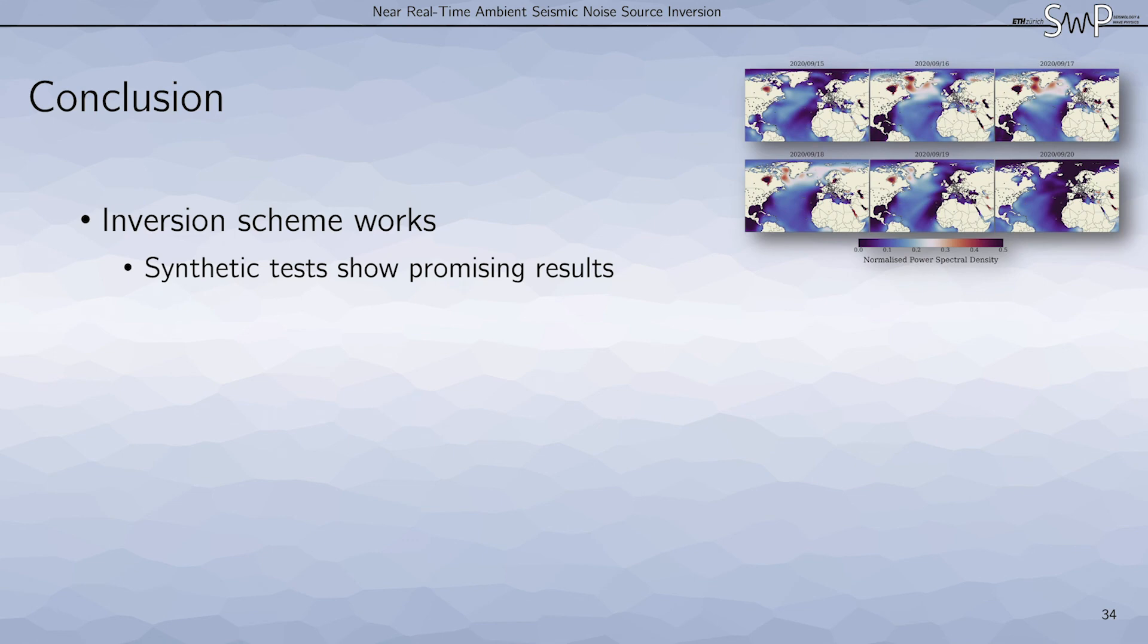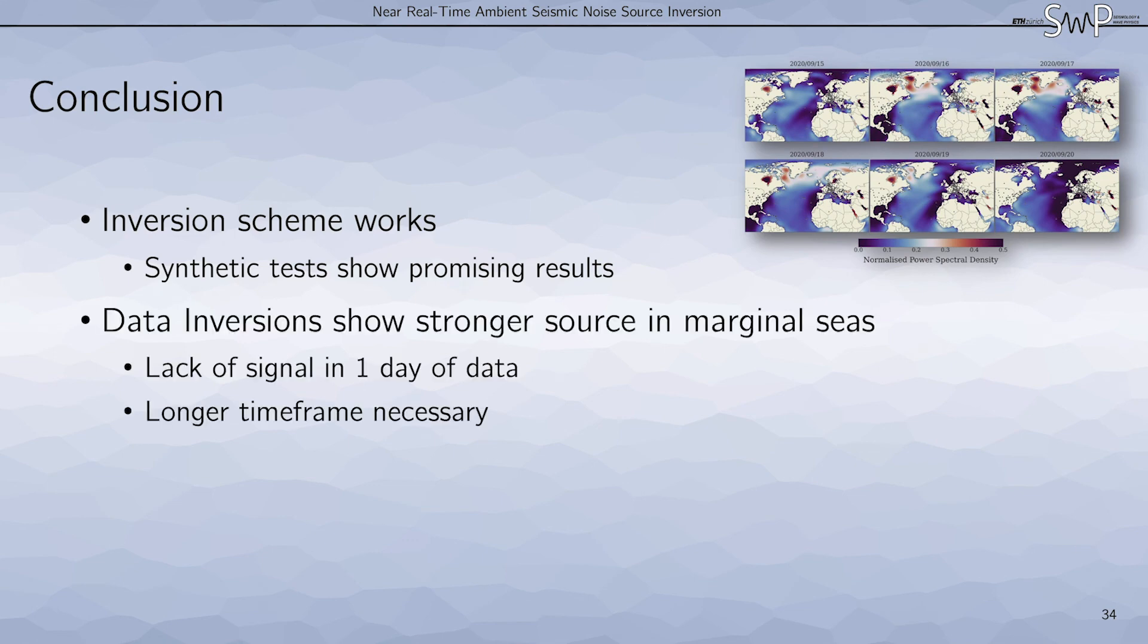To conclude, we have shown that the inversion scheme works quite well and synthetic tests show promising results. However, data inversions show strong sources in marginal seas due to the lack of signal in one day of data. That means we probably have to use longer timeframes to increase the signal-to-noise ratio.